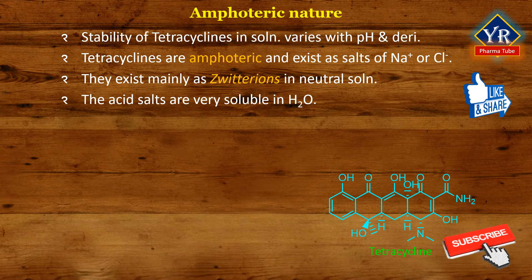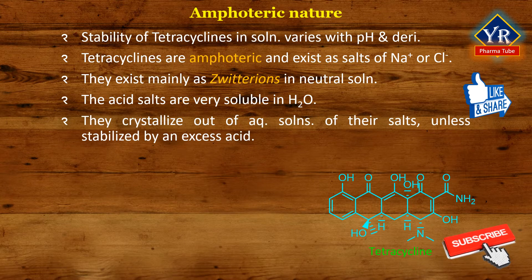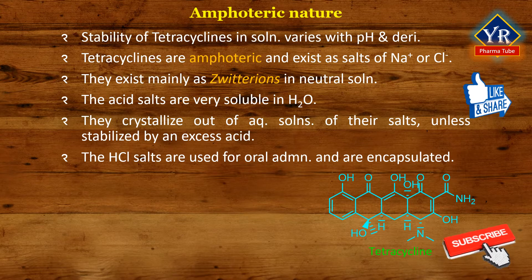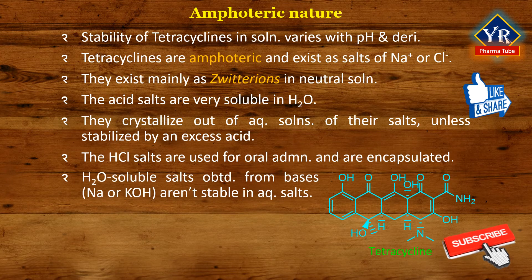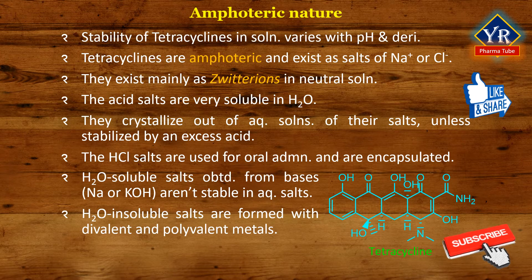The acid salts, which are formed through protonation of the enol group on C2 of the tetracycline, exist as crystalline compounds that are very soluble in water. These amphoteric antibiotics will crystallize out of aqueous solutions of their salts unless stabilized by an excess acid. The hydrochloride salts are used most commonly for oral administration and usually are encapsulated because they are bitter. Water-soluble salts may also be obtained from bases such as sodium or potassium hydroxides, but they are not stable in aqueous solutions. Water-insoluble salts are formed with divalent or polyvalent metals.